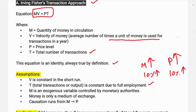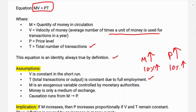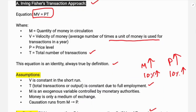The implications of the transaction approach are: if M increases then P increases proportionally, if V and T remain constant. Thus inflation is caused by an increase in money supply. This is the main implication of the transaction approach of the classical quantity theory.